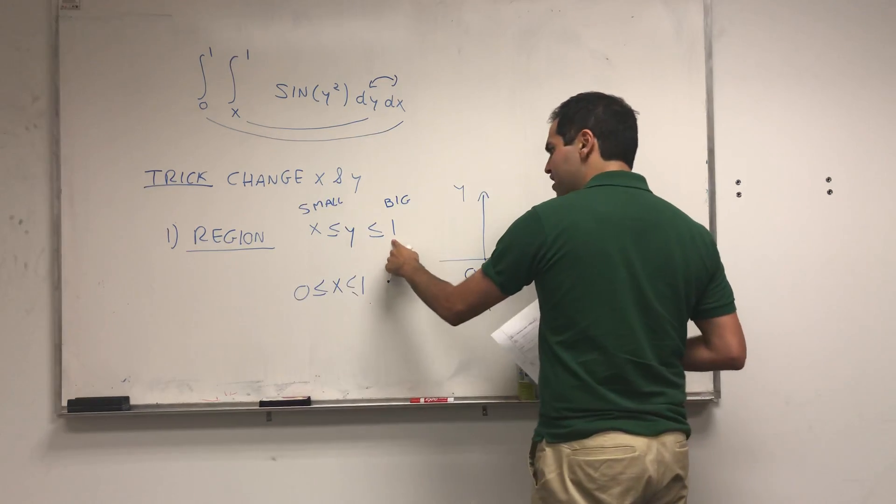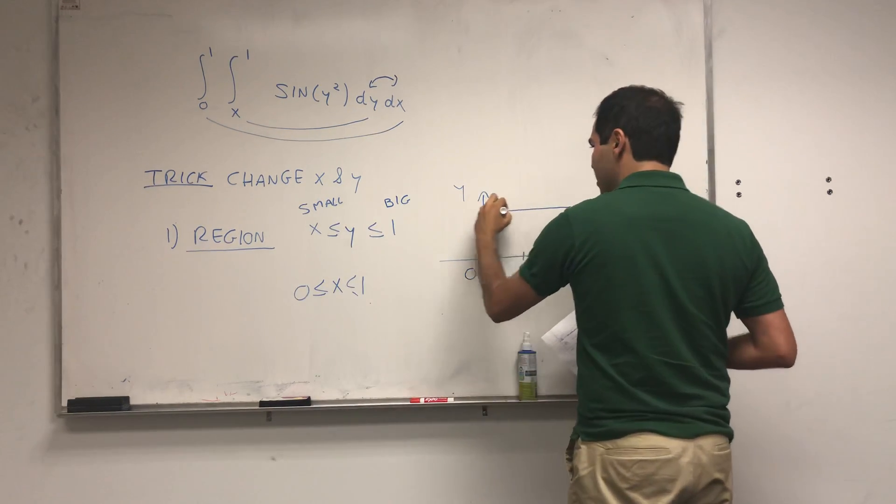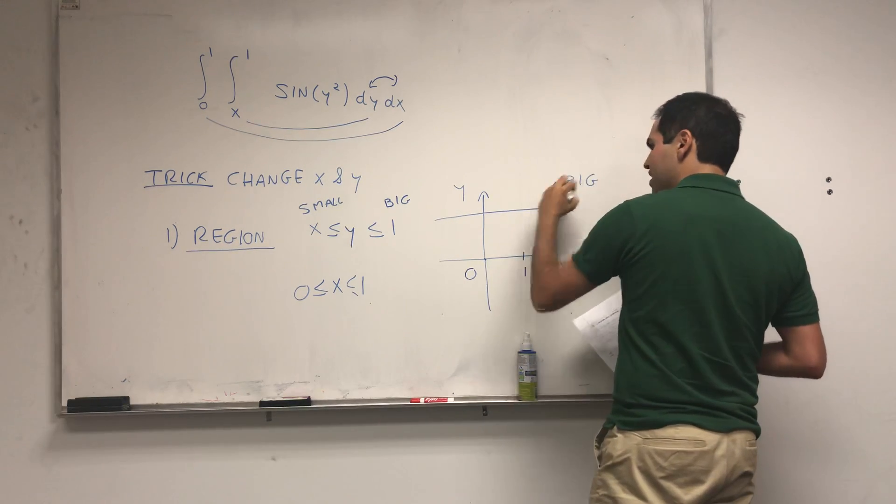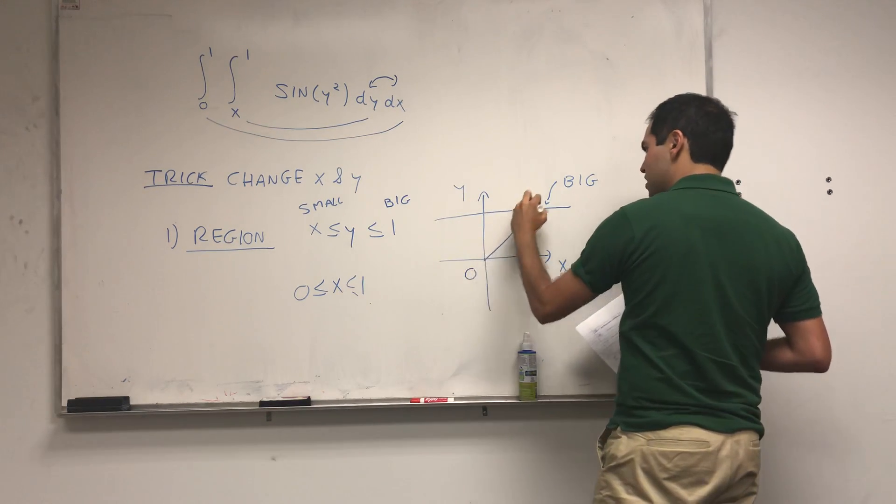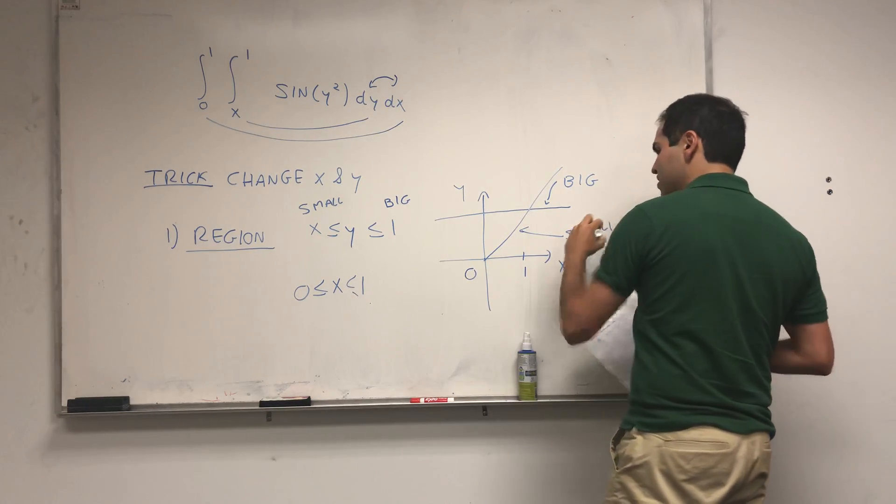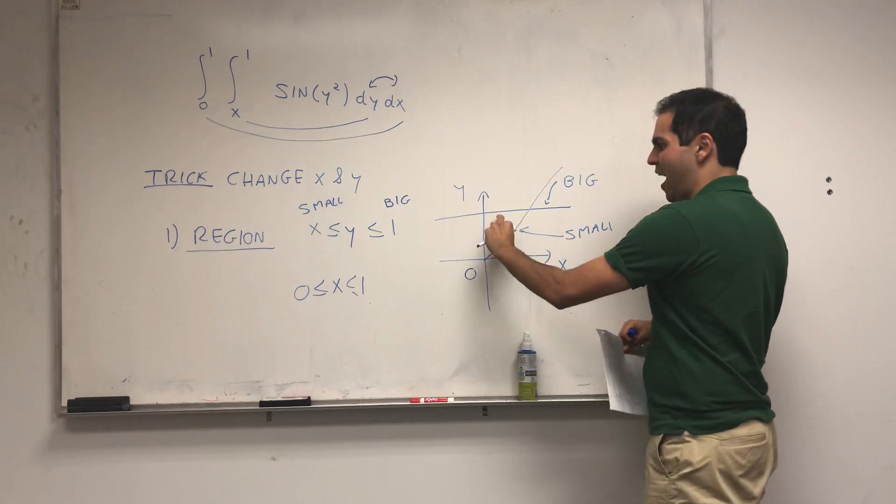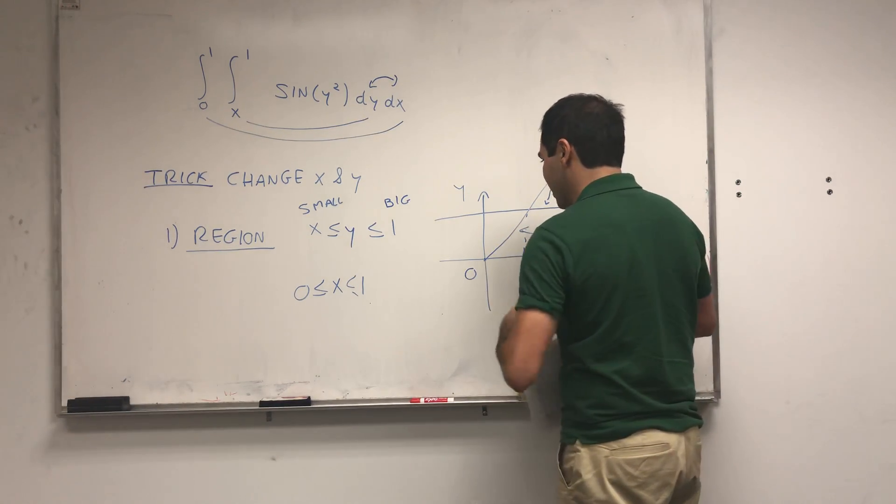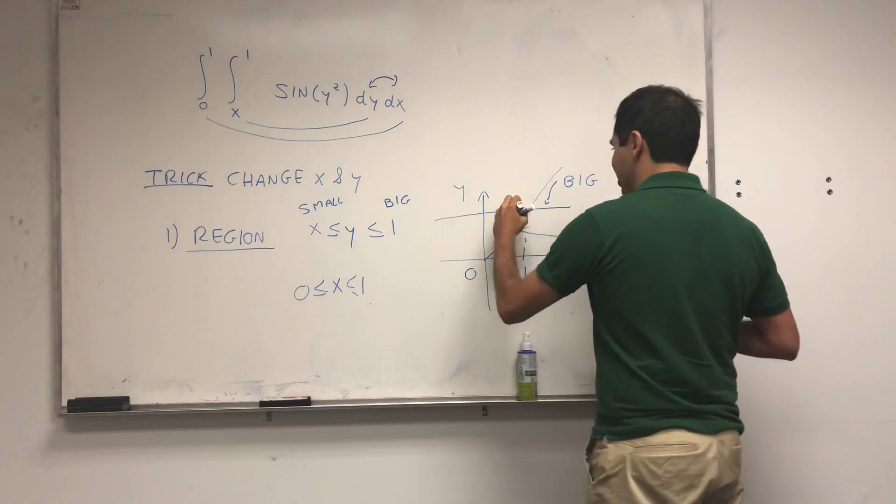So, here the bigger function is 1, and the smaller function is x. So, y is sort of trapped between those two things, and therefore, because x is between 0 and 1, it has to be this region.